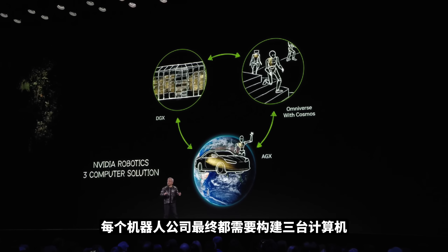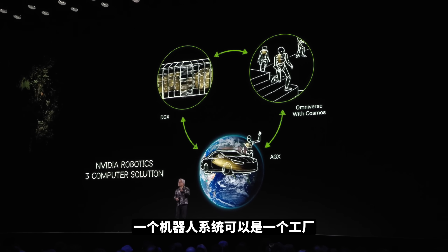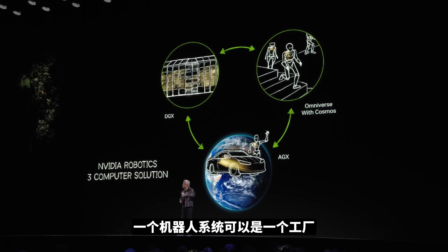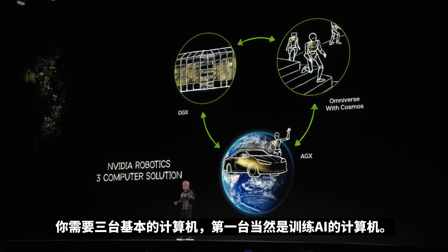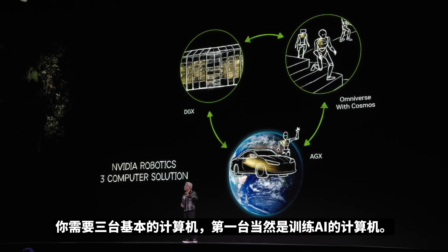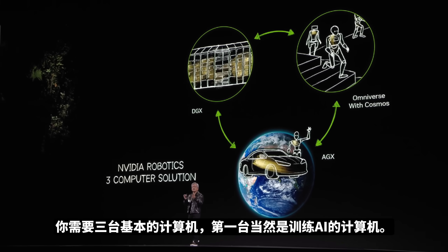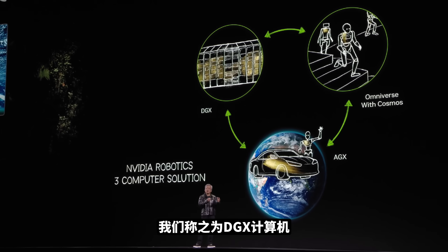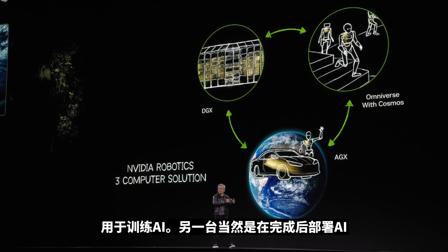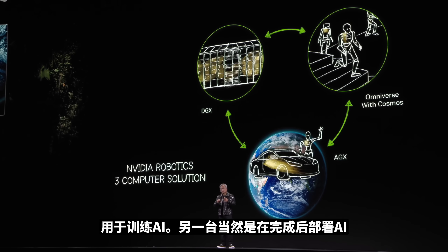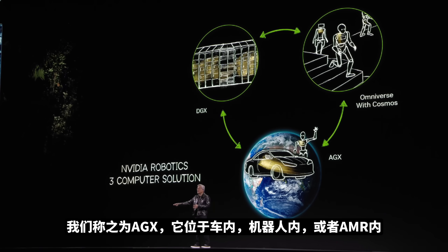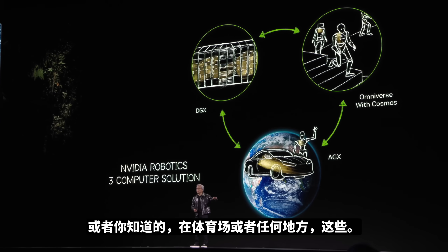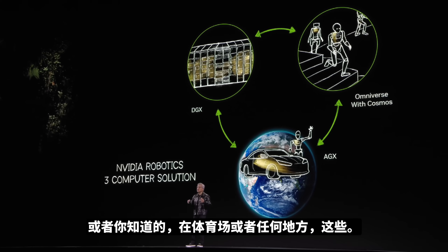Every robotics company will ultimately have to build three computers. The robotic system could be a factory, a car, or a robot. You need three fundamental computers: one to train the AI — we call it the DGX computer. Another, when you're done, to deploy the AI — we call that AGX. That's inside the car, in the robot, in an AMR, or in a stadium, or whatever it is. These computers are at the edge and they're autonomous.